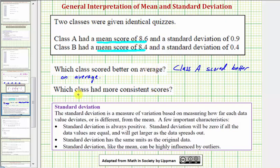Next we're asked which class had more consistent scores. We can answer this question by analyzing the standard deviation. Notice how Class A had a standard deviation of 0.9 and Class B had a standard deviation of 0.4.